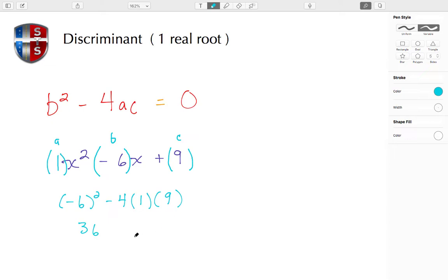I have a negative times a positive times a positive, which will remain negative. 4 times 1 is 4, and 4 times 9 is 36. When I resolve that, 36 - 36, I end up with 0, and 0 does equal 0.